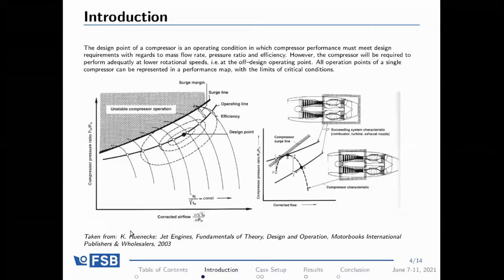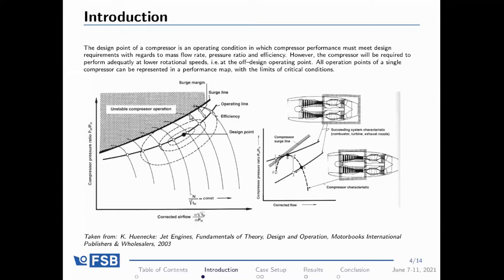The greatest advantage of centrifugal compressors is their larger compression rate compared to a single stage of an axial compressor, however they require a much larger frontal area to pass the same airflow rate as axial ones. Máté's objective was to simulate the design operating points of the centrifugal compressor and check whether we can reach the off-design points.